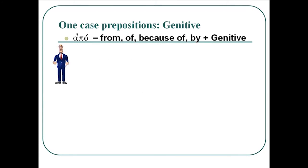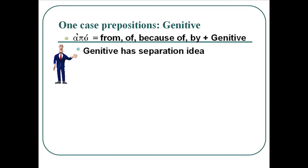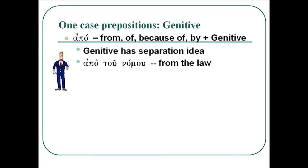Our first preposition is ἀπό (apo). It means from, of, because of, or by. We'll usually translate it as 'from,' and it comes with the genitive case. The genitive case is the case of separation and fits well with ἀπό. An example is ἀπὸ τοῦ νόμου — 'from the law.' You can see the article there too tells you it's a genitive; νόμου from the root noun νόμος means 'from the law.'